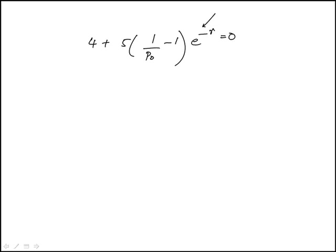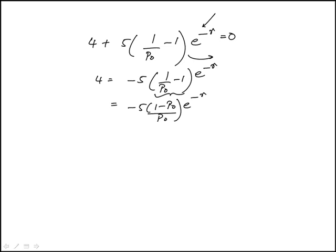So I have to isolate this term. So I'm going to actually move this to the other side. So this would be minus on the outside, 1 over P sub 0 minus 1 times e to the minus r. And I can combine this. So this is 1 minus P sub 0 over P sub 0 times e to the minus r. And to take into account the minus, I'll just multiply it to this term. So that would become 5 times P sub 0 minus 1 over P sub 0.